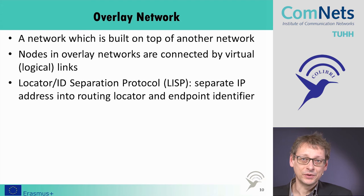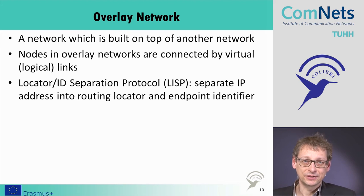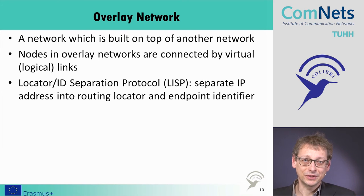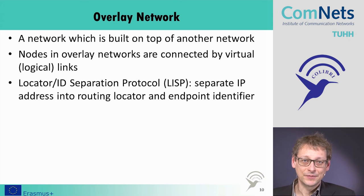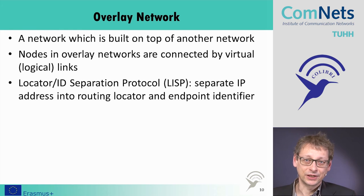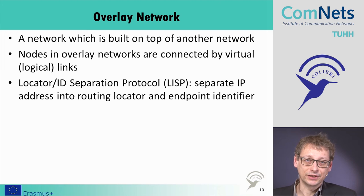With overlay networks, we essentially design a network on top of the existing Internet — a network that is different, allowing quality of service and whatever we want to do, on top of another network. The nodes in the overlay network are connected via virtual links realized by real network links. For example, with this approach we can split the IP address, giving a location and an identifier for the application. That is what we call the locator-identifier separation protocol, such as LISP.